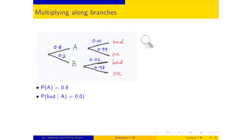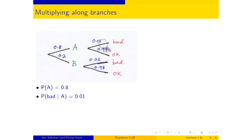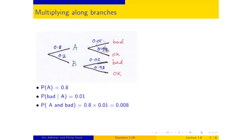If I take a randomly produced widget and ask: what is the chance that it was produced by machine A and it's bad? It has to be produced by machine A — 80% are like that — and of those, 1% are bad. So my answer is 1% of 80%. That's the multiplication rule: the chance of being made by machine A and bad is 0.8 times 0.01, which gives 0.008.